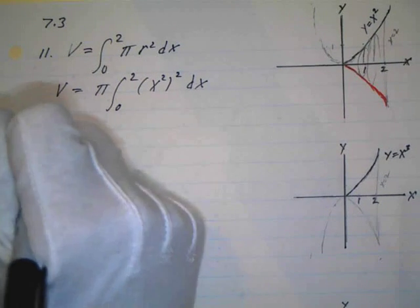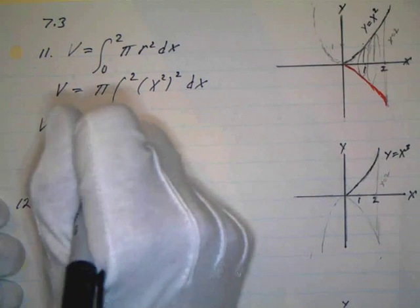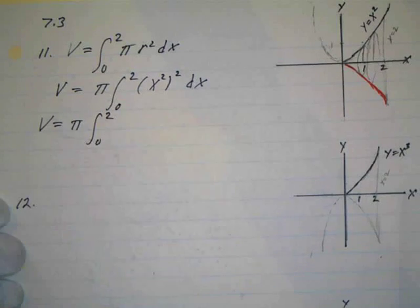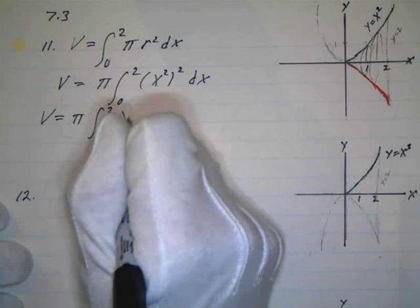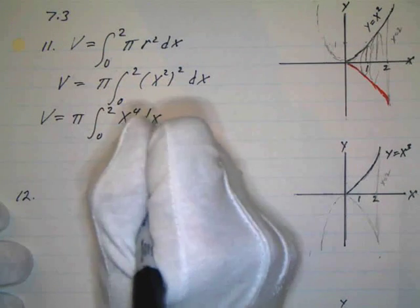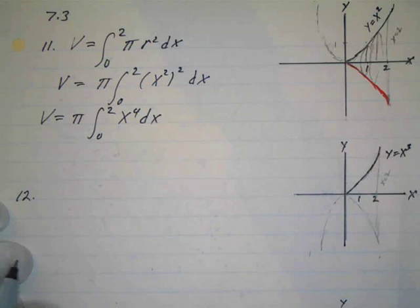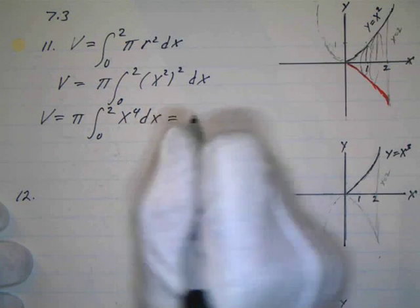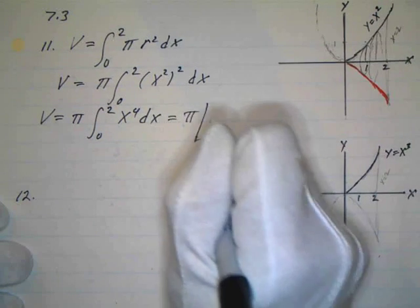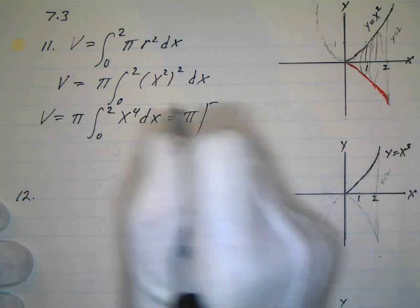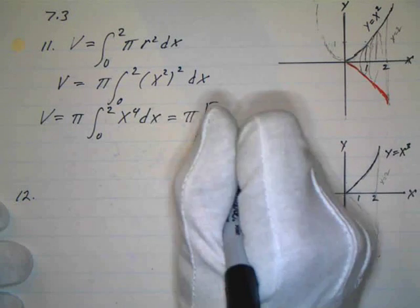And we can simplify that a little bit so the volume will equal pi times the integral from 0 to 2 of x to the 4th dx. And I'm ready to take the antiderivative. So that equals just pi times and that's going to be x to the 5th over 5.